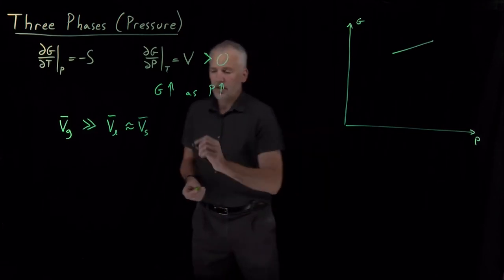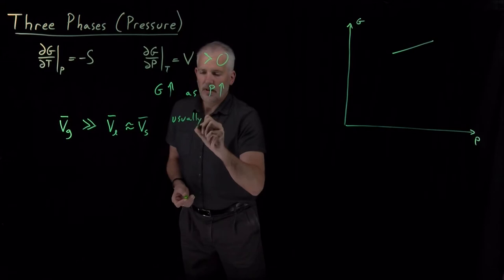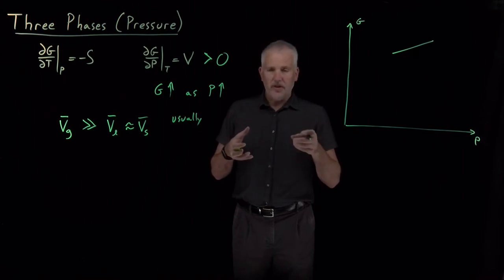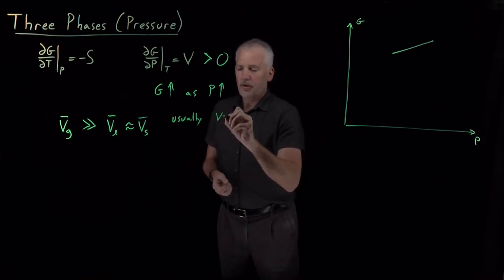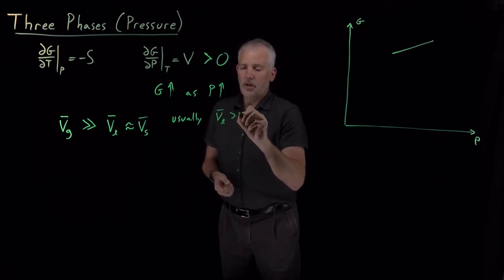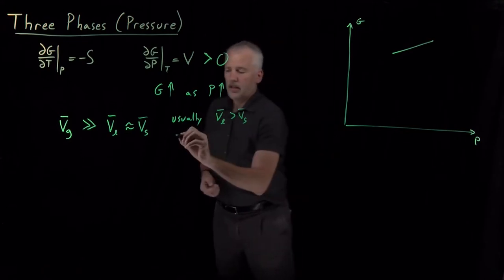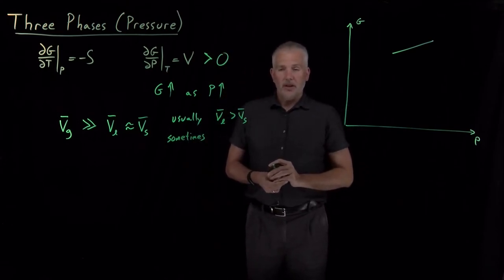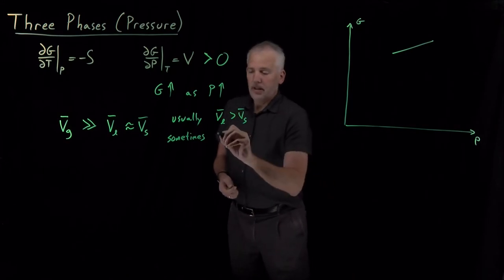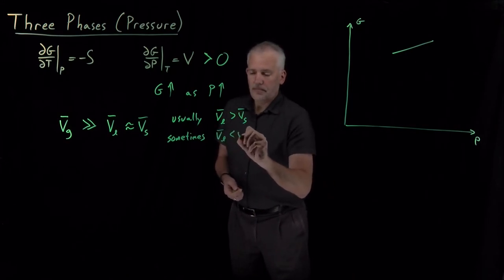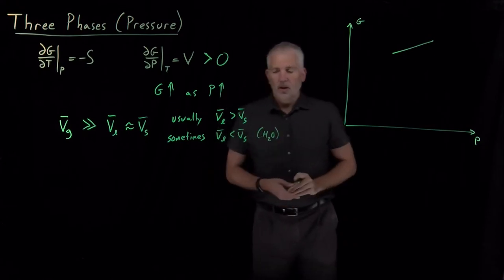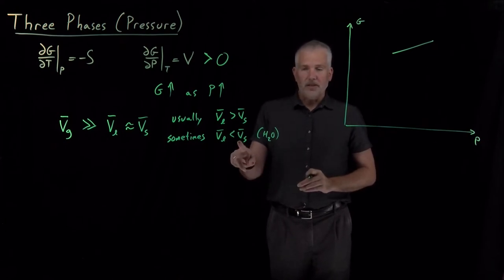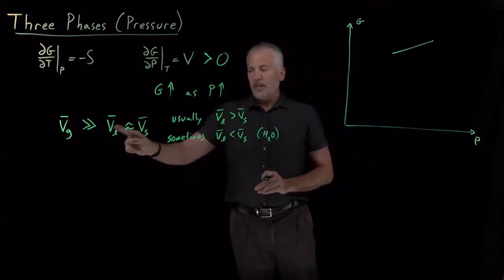Most solids have densities larger than their liquids. If you freeze a liquid into a solid, it will usually sink in the liquid, so the volume taken up by the liquid is going to be larger than the volume taken up by the solid. That's not always true, however — you can probably think of at least one liquid where if you freeze it the solid will float on top of the liquid. For water in particular, water is less dense as an ice cube than in liquid form, so it takes up more space as a solid than as a liquid.